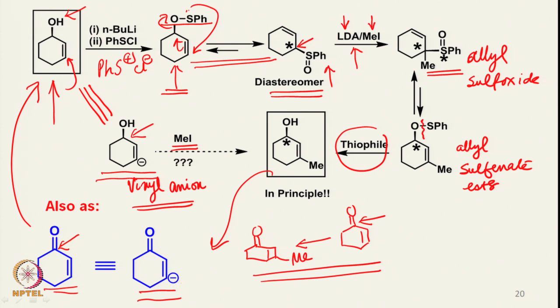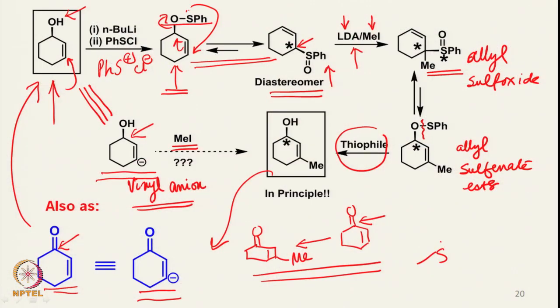We will take up some other aspects of this particular reaction in the next class, because we can also carry out such reactions in an enantiomeric fashion. When a sulfoxide has two different groups and a lone pair of electrons, it can be made chiral, and if used as a chiral substrate one can examine how diastereoselectivity occurs. We will take up the remaining part of the sulfoxide-sulfenate rearrangement next time. I hope you will be able to go through these, see the references mentioned, and be prepared for the next class. Thank you.